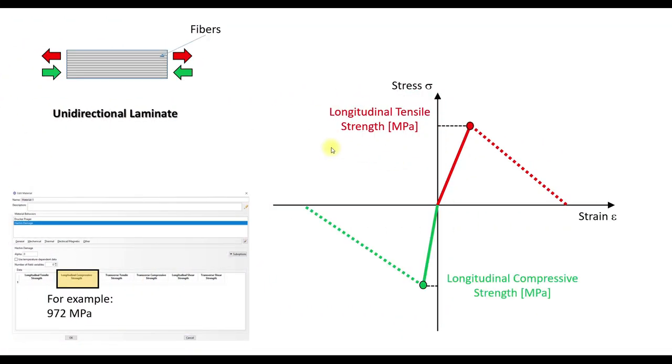Next, we have longitudinal compression. In this case, we have the stress-strain diagram again, and in the negative direction, we have compression. This is the value, and for example, it can be like 972 megapascals. Now I will also show a short clip of a composite specimen under compression.